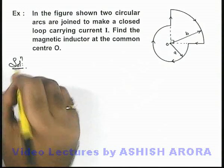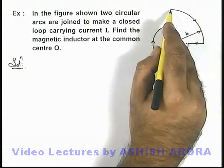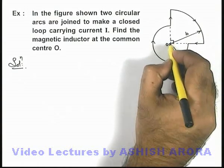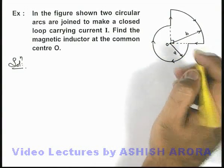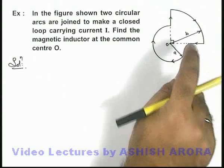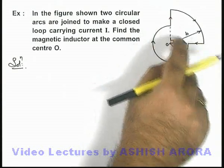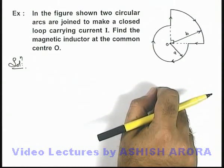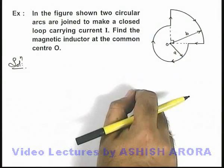Here in solution we can see, due to the bigger arc of radius b which is subtending an angle 90 degrees at its center, the magnetic induction is in inward direction. Due to the smaller arc also, the current is flowing in a clockwise manner, so again magnetic induction according to right hand thumb rule will be in inward direction.